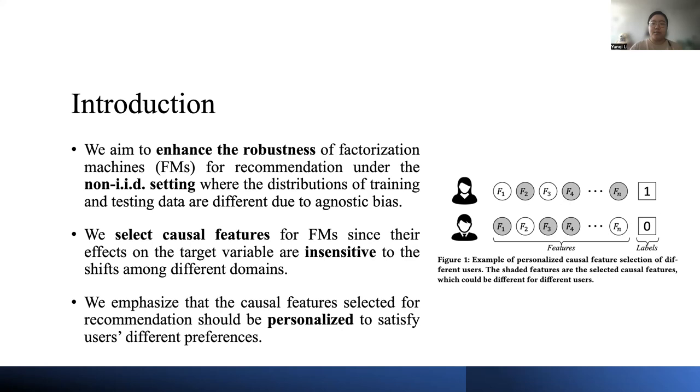Previous studies have shown that a reasonable way to achieve a robust predictive model is to learn the model with causal features, since effects of causal features on the target variable are insensitive to the shifts among different domains. In this work, we follow such idea and propose to select causal features for factorization machines.